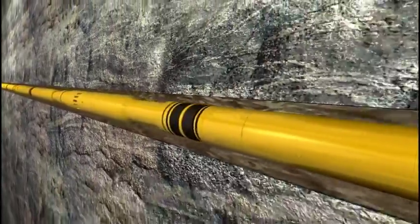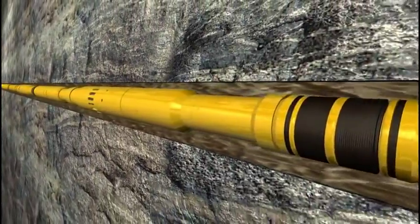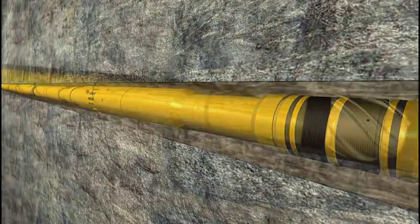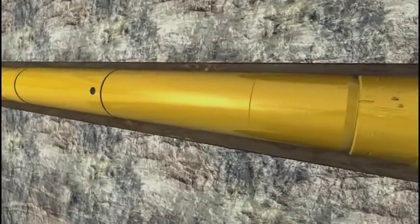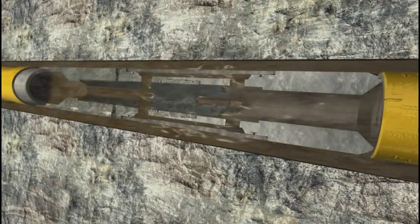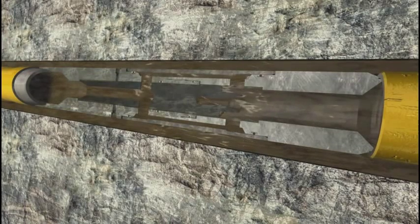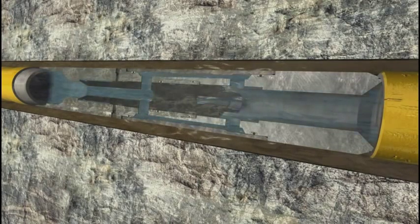The Frack Point system is run in the well in the closed position like any other typical production liner. The wellbore isolation valve is in the open position allowing circulation through the system. The sleeves are in the closed position. Upon reaching the desired depth with the completion liner, displacement operations can begin.